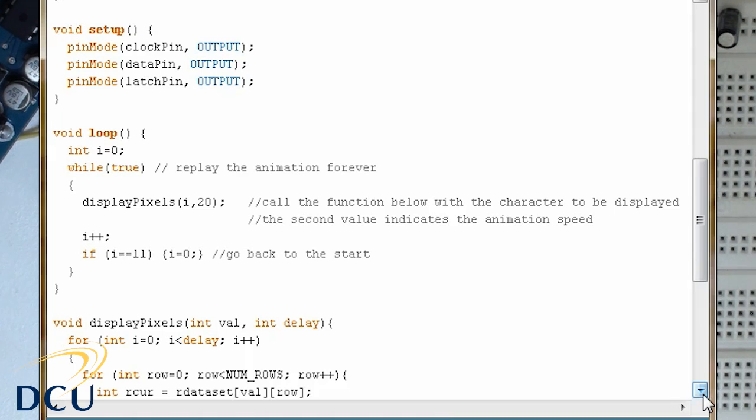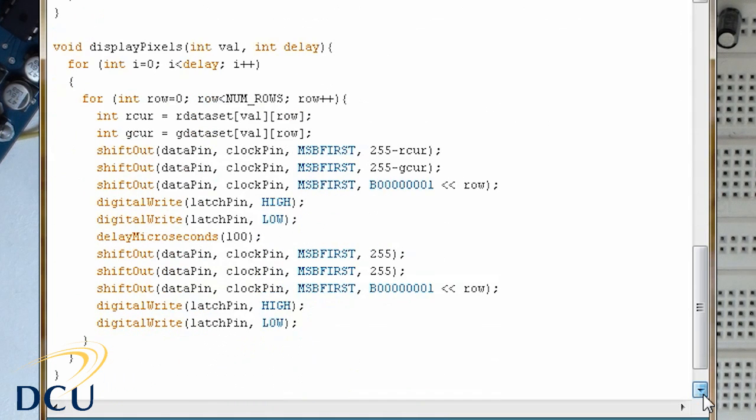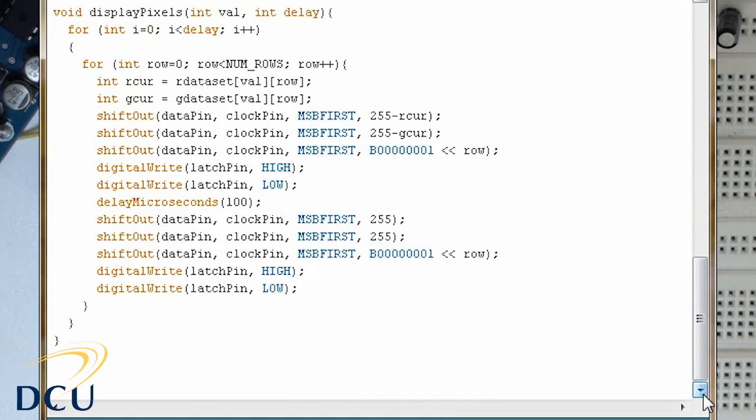We set up the clock pin, data pin and latch pin as output pins. And then we go into our loop function which is where we just loop over and over again to display each symbol a certain number of times. In this case I have defined it 20 times. The animation goes through all 12 of the data set values and goes back to the start then.